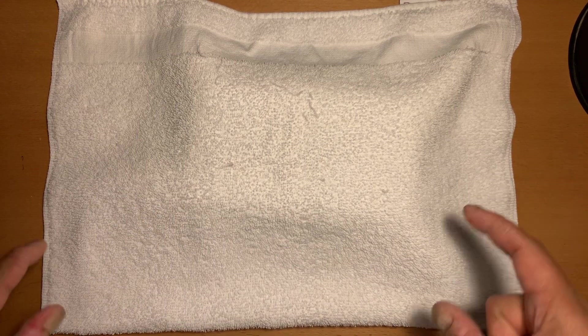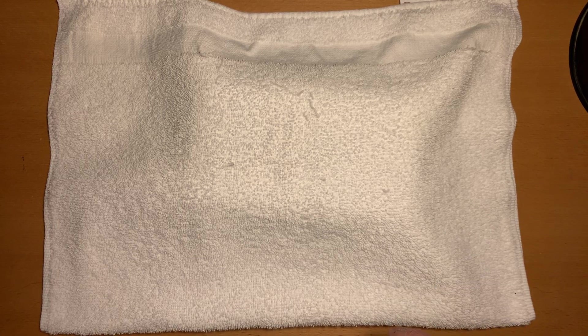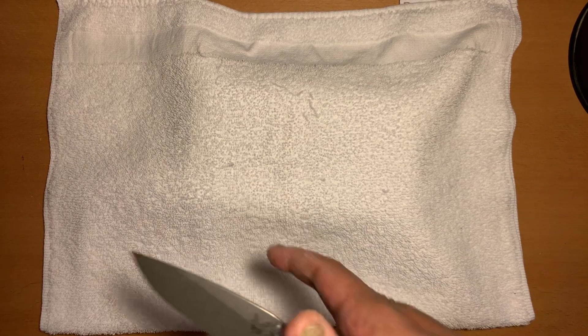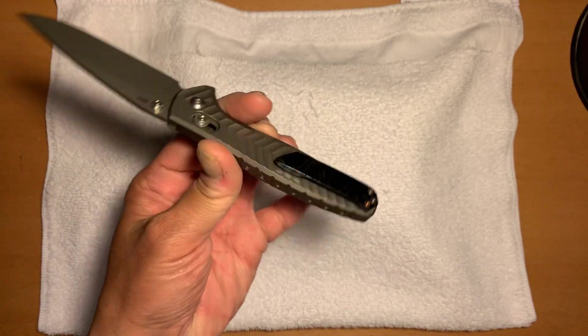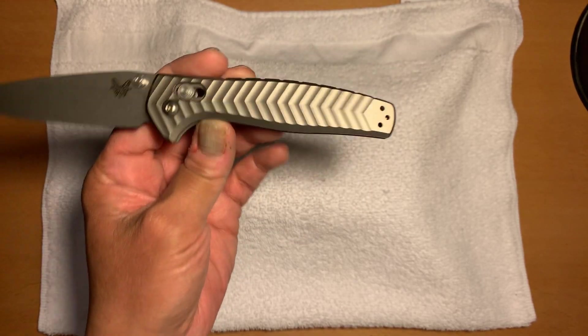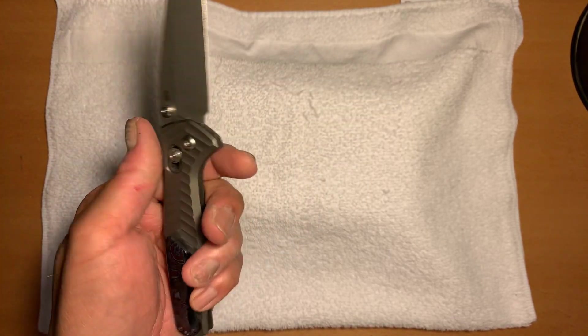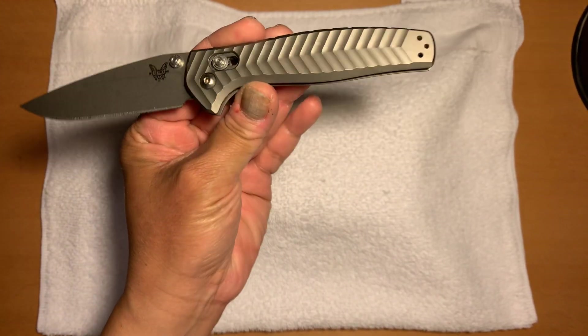So underneath this towel is knife number two, if you guys recall. Knife number one was the Benchmade Anthem. I had to have this knife. I thought this was probably one of the best knives that I had ever seen as far as quality, as far as performance, as far as action. Everything at all. I mean, this was it.